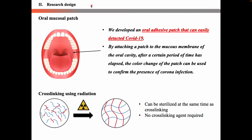We develop an oral adhesive patch that can easily detect COVID-19. By attaching a patch to the mucous membrane of the oral cavity, after a certain period of time has elapsed, the color change of the patch can be used to confirm the presence of coronavirus infection. Radiation cross-linking can sterilize and cross-link at the same time, with no need to use a harmful chemical cross-linking agent. Therefore, the polymer cross-linking will proceed through irradiation.